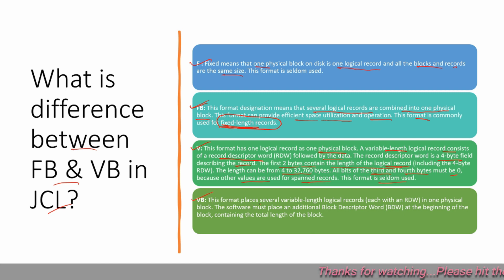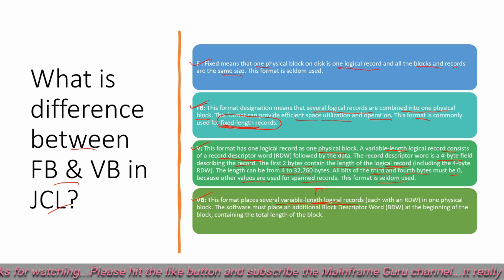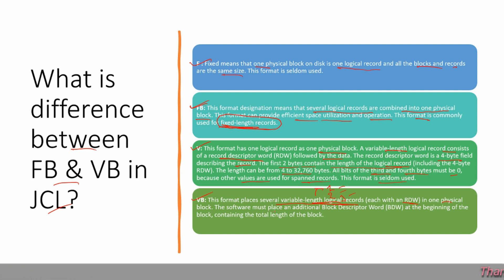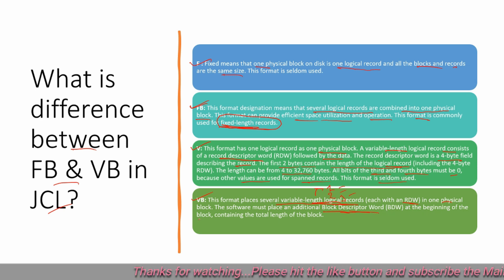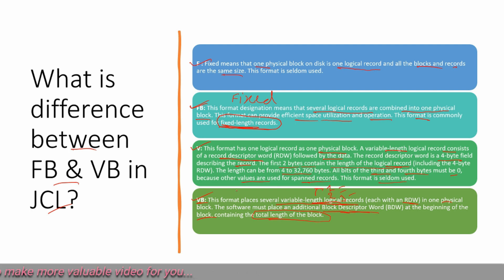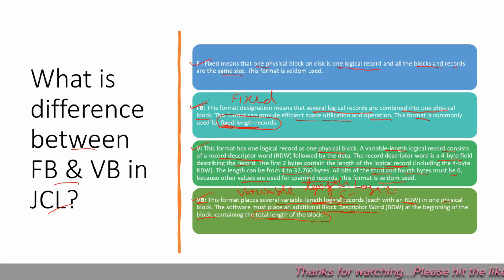VB — variable block — places several variable-length logical records into one physical block. The logical record length is defined for each record and stored in the RDW. The software must also place a Block Descriptor Word (BDW) containing the total length of the block. In fixed block we have fixed-length logical records, but in variable we have variable-length logical records.